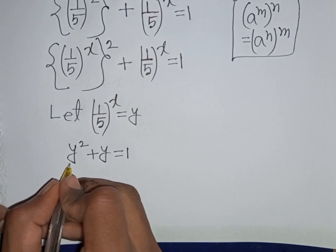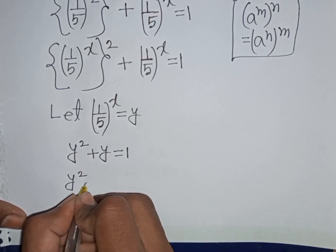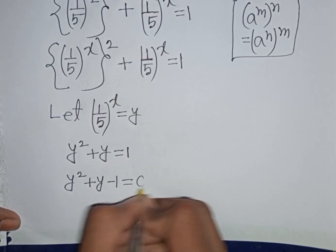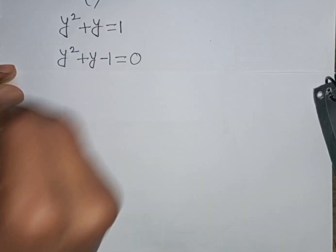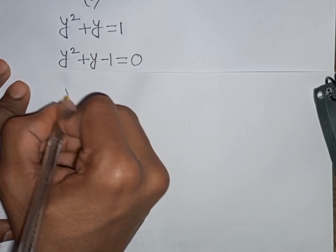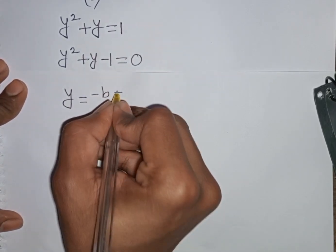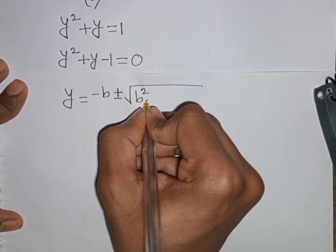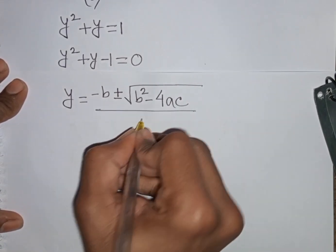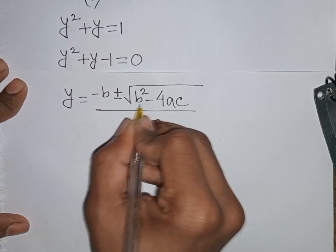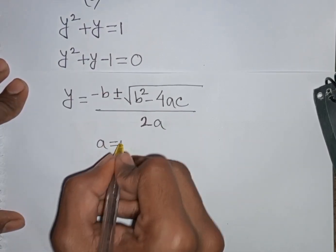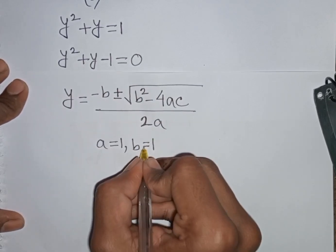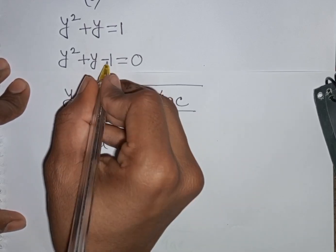Our equation is y squared plus y equals 1. Rearranging, we get y squared plus y minus 1 equals 0. Now we apply the quadratic formula: y equals minus b plus or minus square root of (b squared minus 4ac) divided by 2a. Here a equals 1, b equals 1, and c equals negative 1.